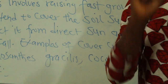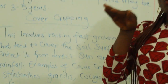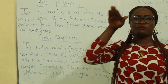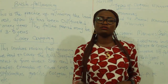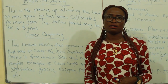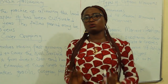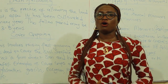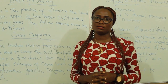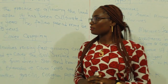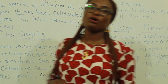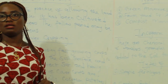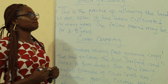What these crops do is prevent heavy rainfall or heavy downpour on the soil and in turn protect and preserve the soil fertility. That's the third method of maintaining soil fertility.